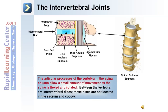This image depicts the intervertebral disc between two vertebral bodies. The disc is made up of a disc end plate, a disc nucleus pulposus, and a disc annulus pulposus.